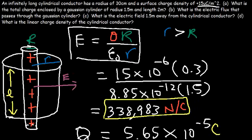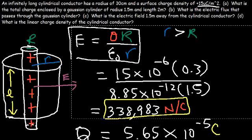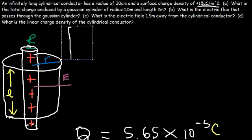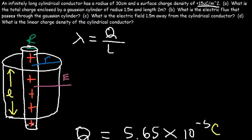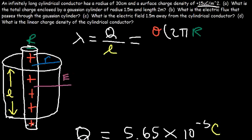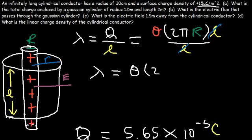For Part D: what is the linear charge density of the cylindrical conductor? Lambda equals Q divided by L. Since Q equals sigma·2πRL, we can cancel L, giving lambda = sigma·2πR. So the linear charge density equals the surface charge density times the circumference of the conductor: 15×10⁻⁶ × 2π × 0.3 meters.